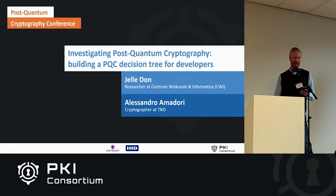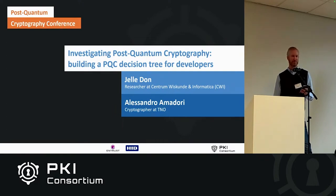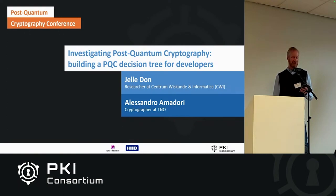Alessandro is a cryptographer who has been working for TNO for the last two years, mostly focusing on the migration to post-quantum cryptography. He has a PhD from Eindhoven University, focusing on secure cryptographic implementations in untrusted environments. Jelly is a researcher in the cryptography group at the Centrum Wiskunde en Informatica, CWI, nearing the completion of his PhD — congratulations — on provable security in the quantum random oracle model.